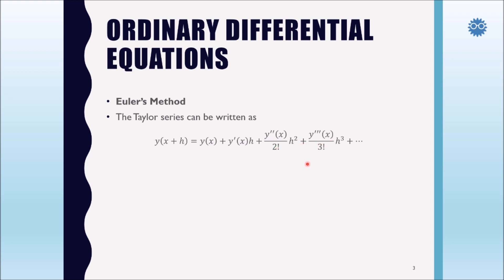In order to get the Euler formula to solve the first order differential equation, we truncate this series. We omit the second derivative, the third derivative and higher derivative terms, in order to obtain this formula of Euler's method.